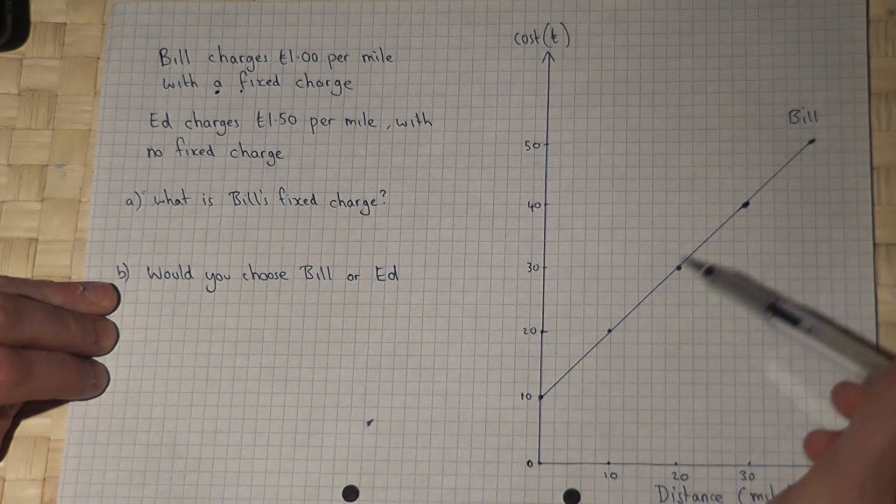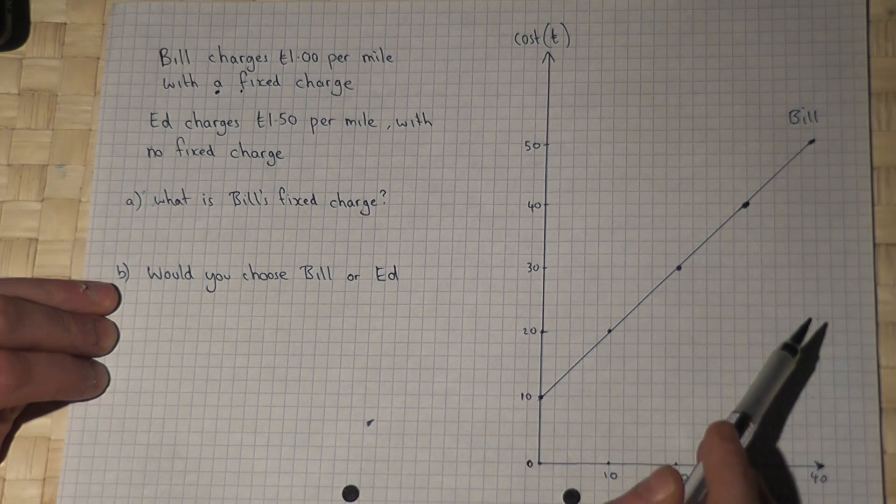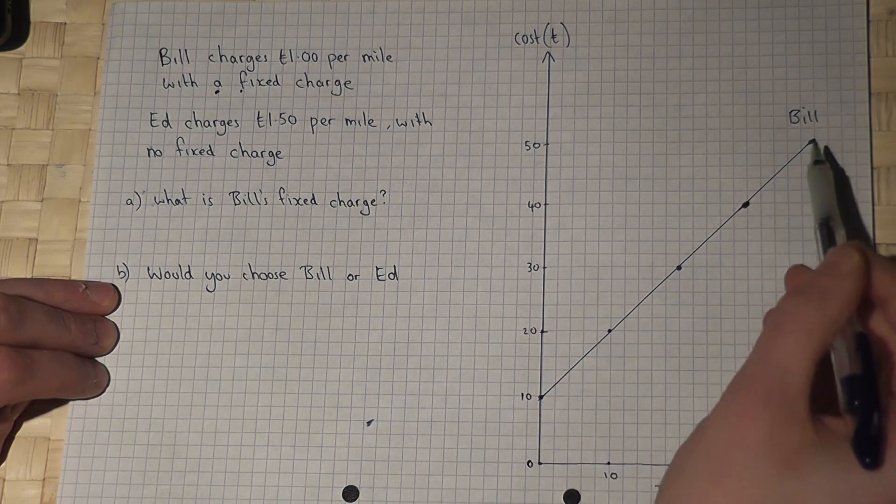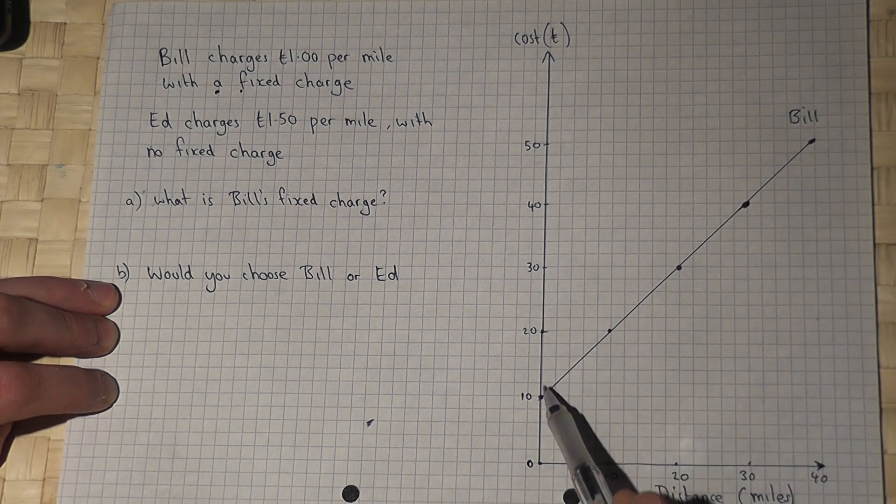Now this is Bill's cost graph, and Bill has a fixed charge which, if we trace the graph back down to the axis, is £10.